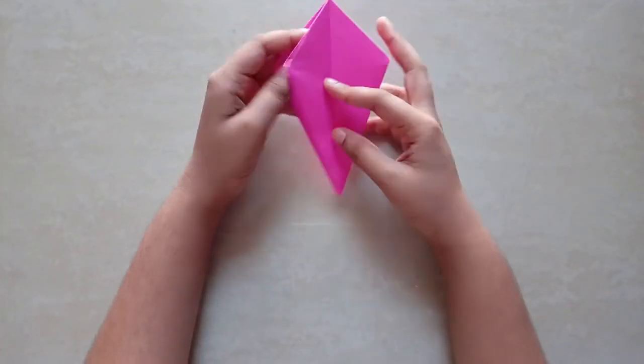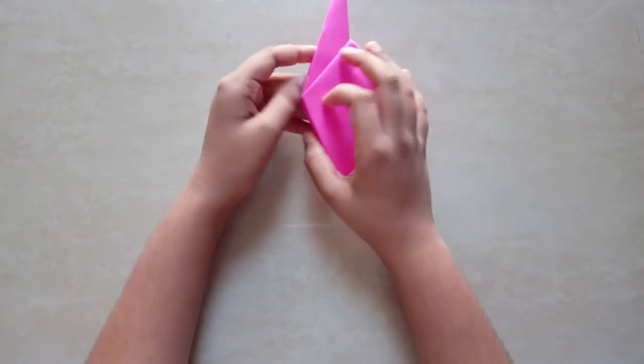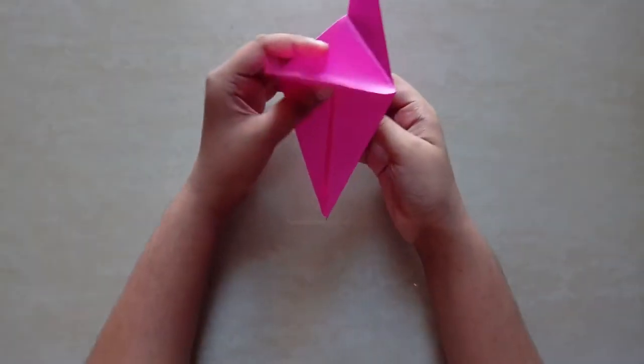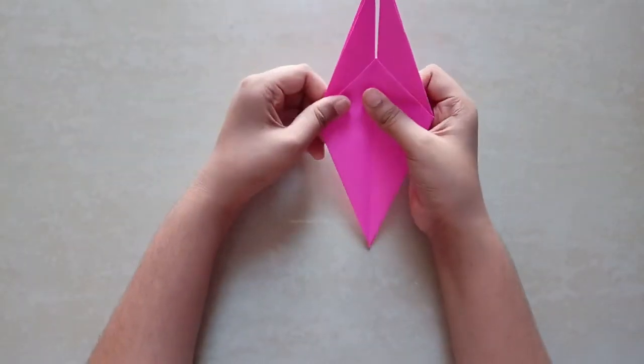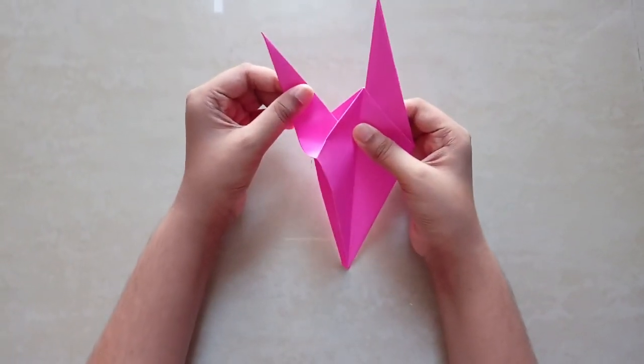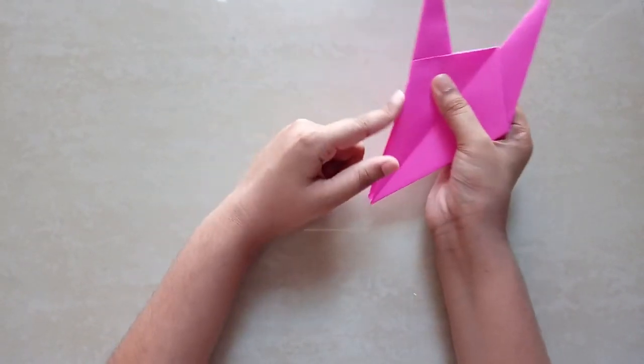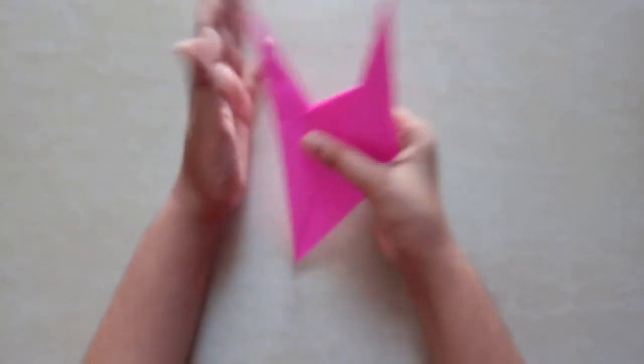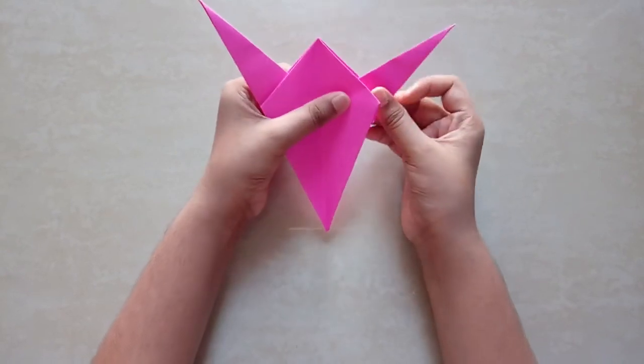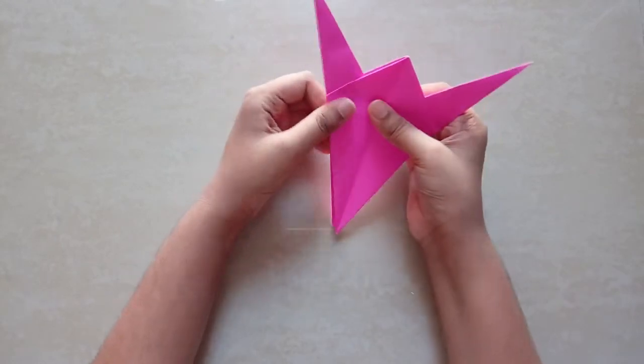Now the next step is you're gonna open this flap and take this right there. You're gonna open this flap and take this whole flap and bend it like this so that it aligns with this line. This whole line goes like that, and you're gonna repeat the same with this side too. Press it.